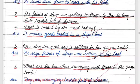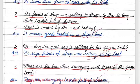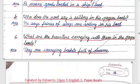Part c: What are the travelers carrying with them in the paper boats? Answer: They are carrying a basket full of dreams.